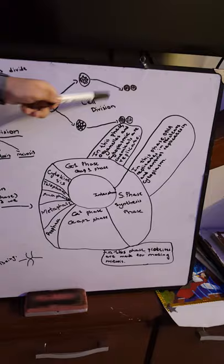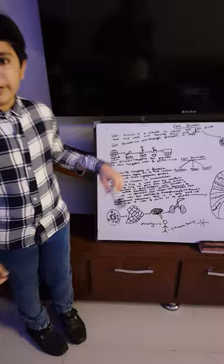Cell division happens for growth. It can happen in three types: amitosis, mitosis, and meiosis.